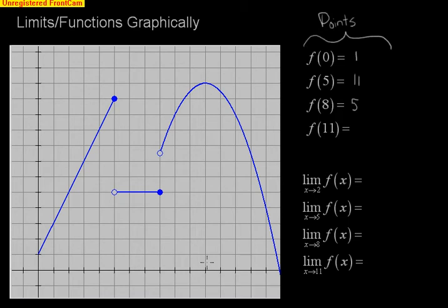And then 11. This is 8, 9, 10, 11, and then all the way up to the top of that parabola, 1, 2, 3, 4, 5, 6, 7, 8, 9, 10, 11, 12. So 11 comma 12. Those are just finding points on the graph.